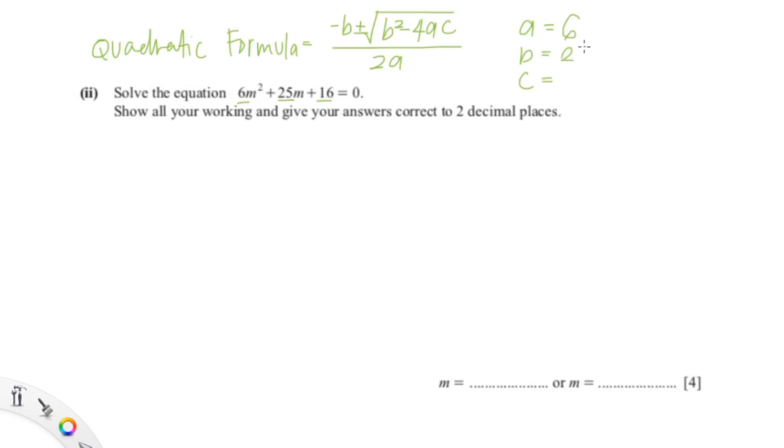So it's 6, 25, and 16. So now we're just going to sub in all the values into the formula. So it would be [-25±√(25²-4×6×16)]/(2×6), which would simplify to (-25±√241)/12.